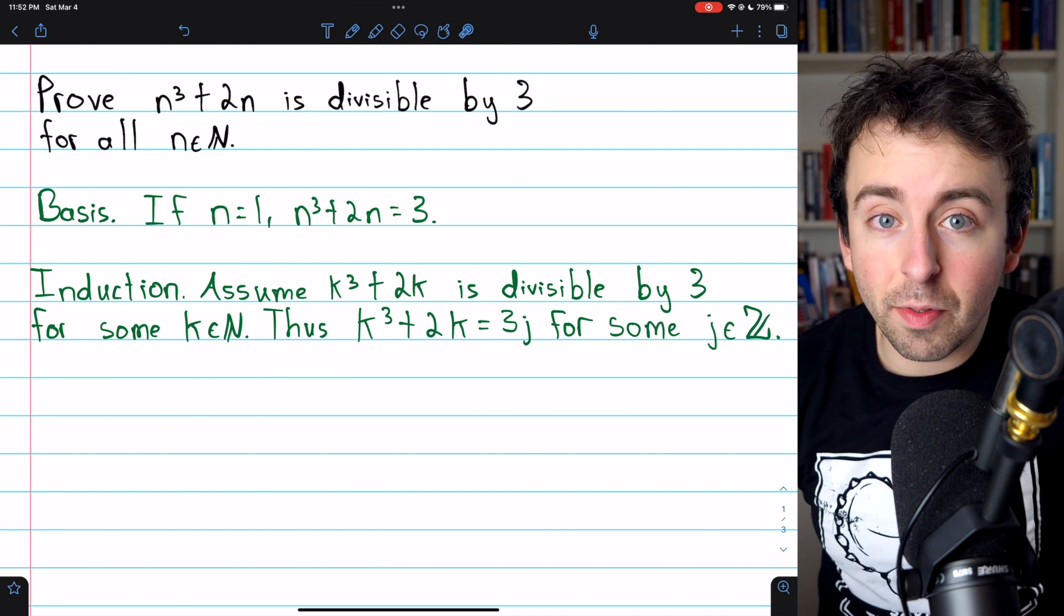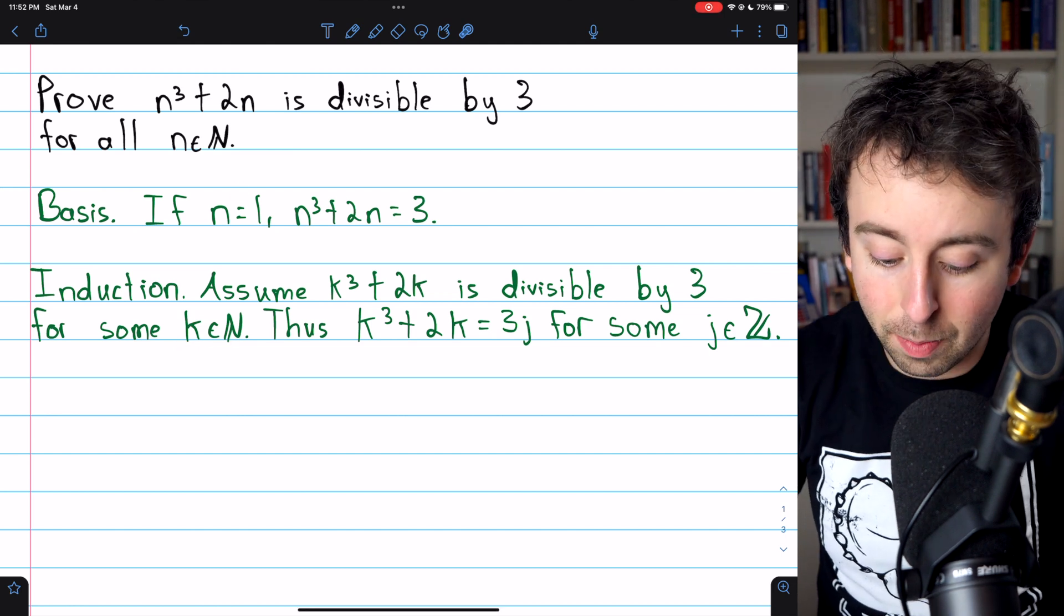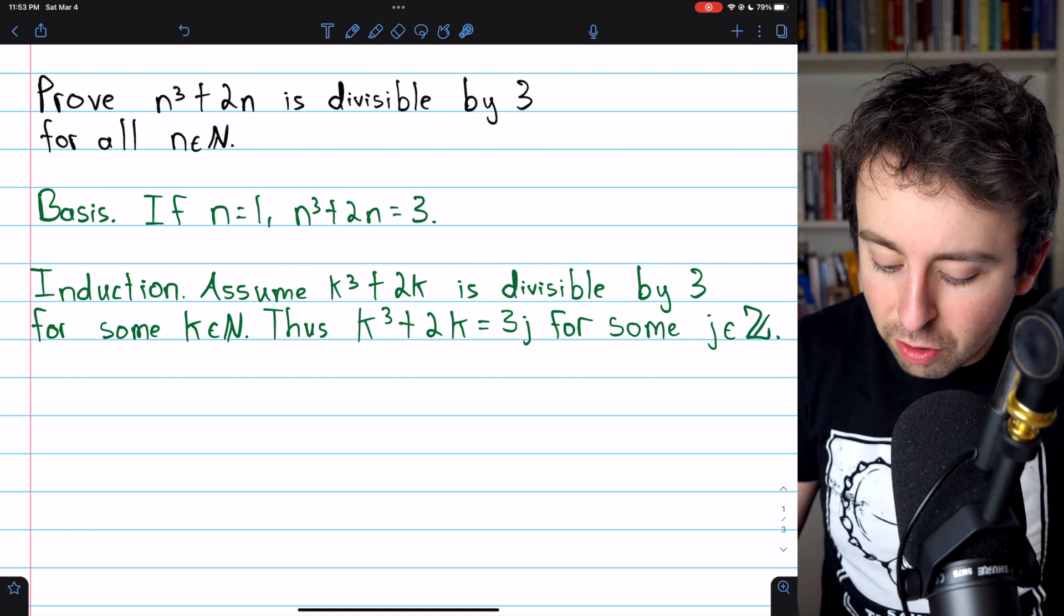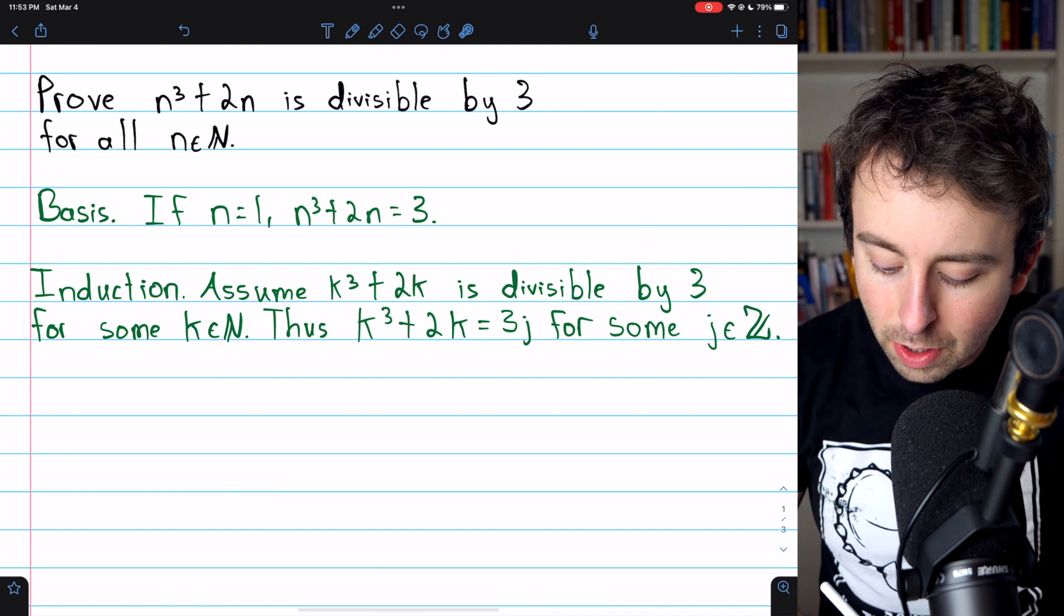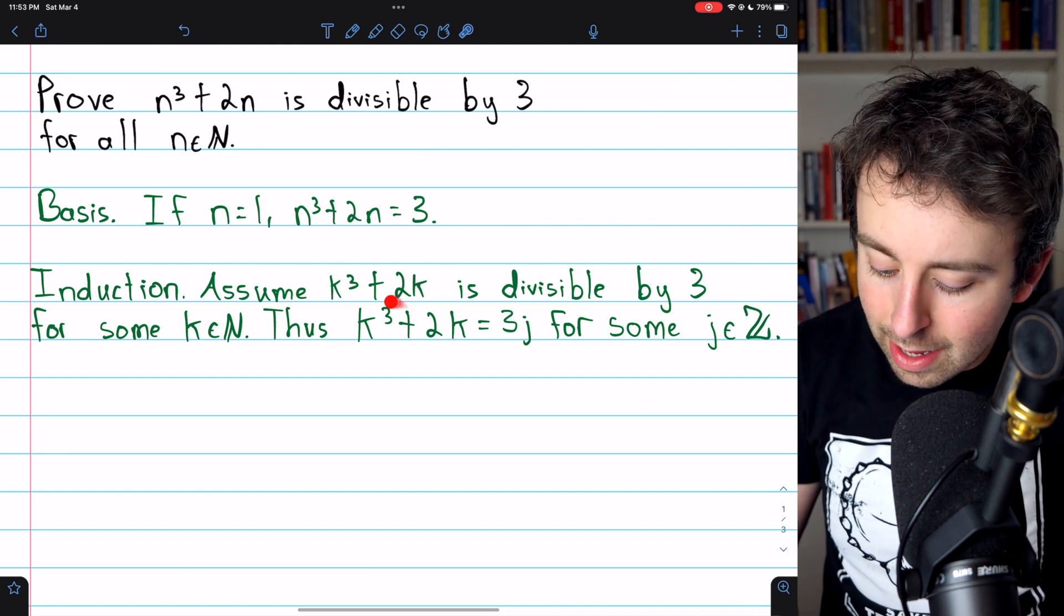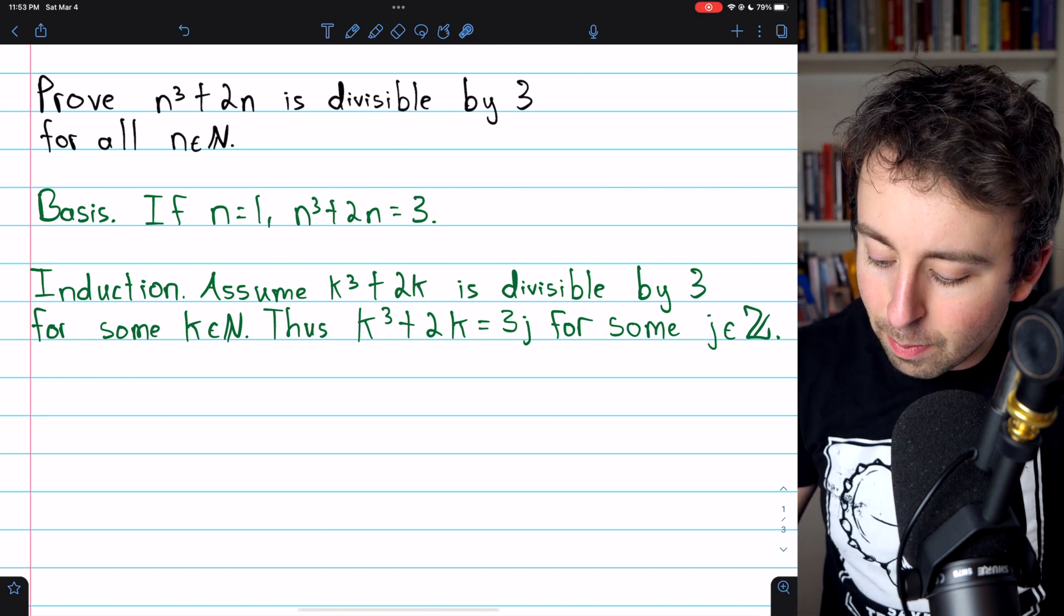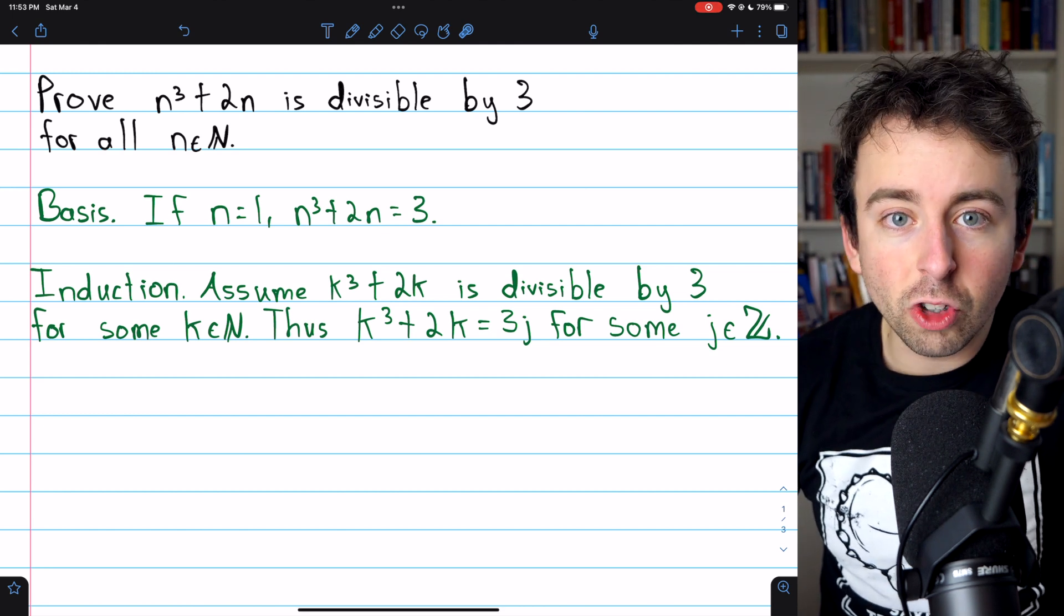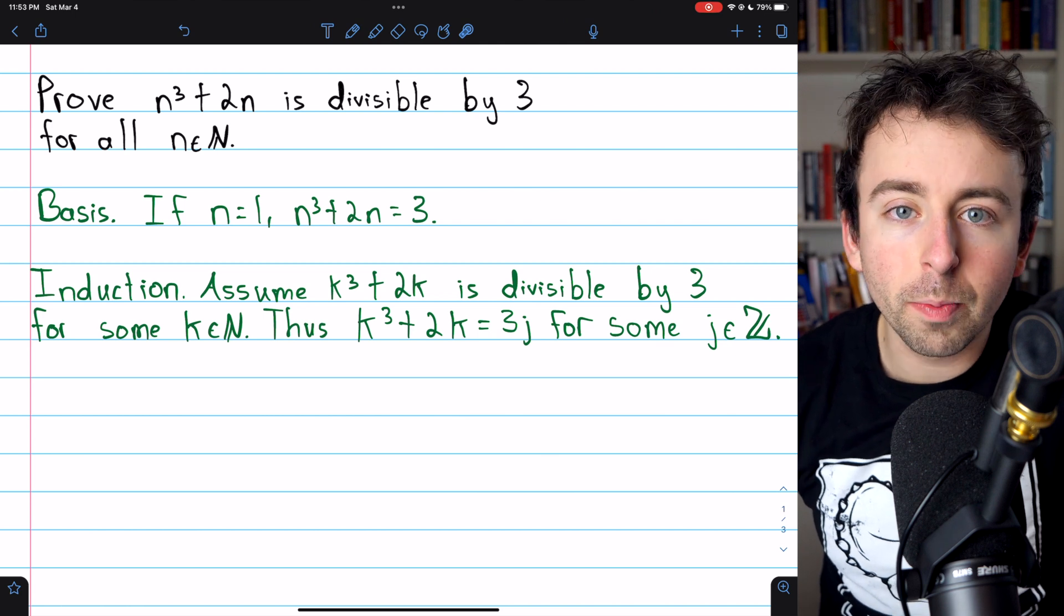Recall that this is a valid assumption, that our result is true for some positive integer, because in the basis step, we prove that it's true for some positive integer. So we assume that k cubed plus 2k is divisible by 3 for some natural number k. By definition of divisible, this means that k cubed plus 2k is equal to 3 times j for some integer j.